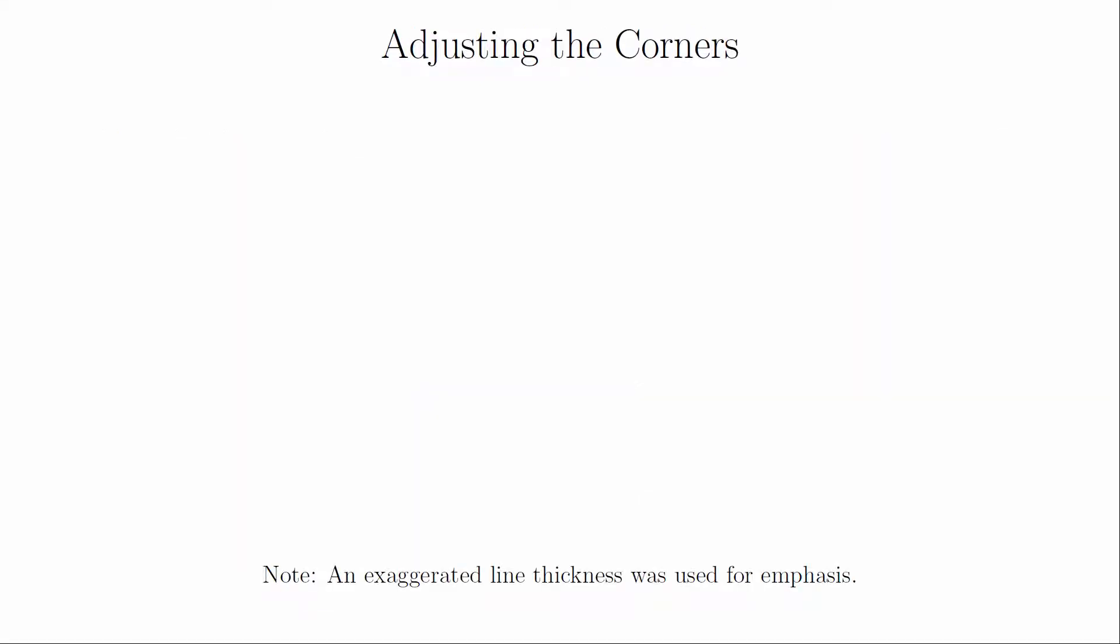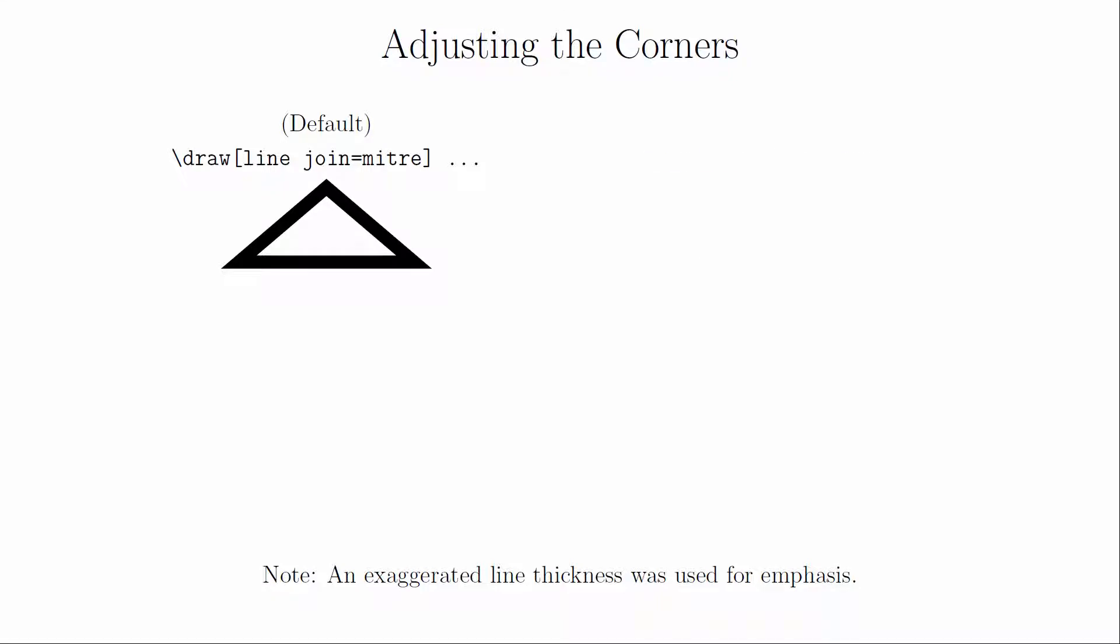When stringing multiple points together, you can specify how TikZ draws the corners. A miter creates sharp corners, and this is the default behavior. A bevel blunts the corners by cutting them at an angle, or you can use round corners.